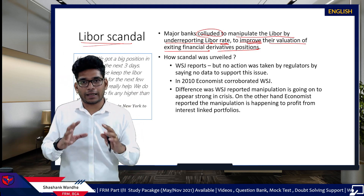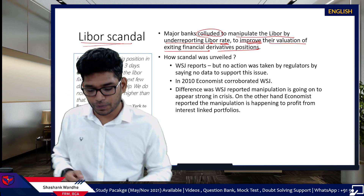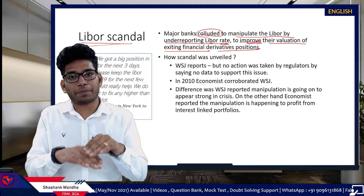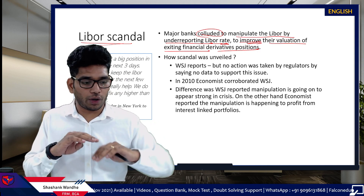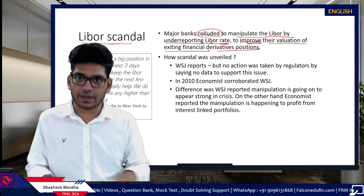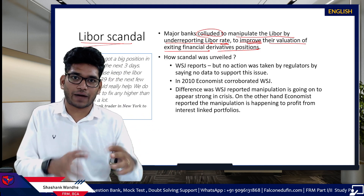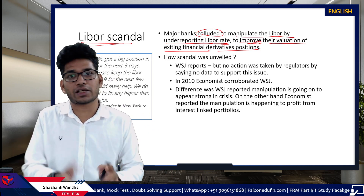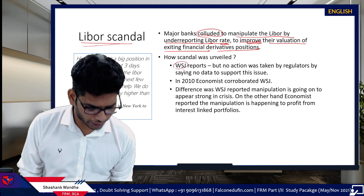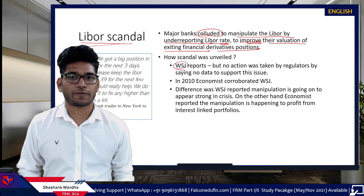This scandal came to light specifically during the 2008 crisis. Banks kept under-reporting, and the whole market was going out of control, but LIBOR was very stable — that's why it came into the light. Something was going on with the LIBOR, and the Wall Street Journal was the first to report on it.